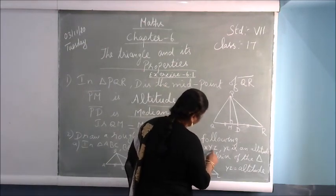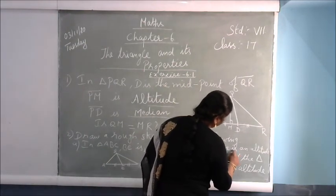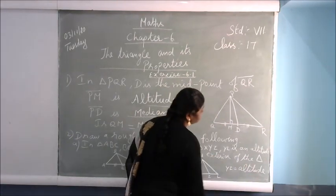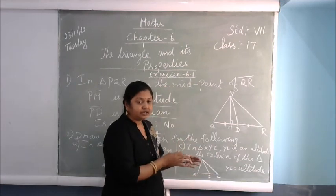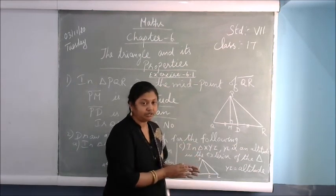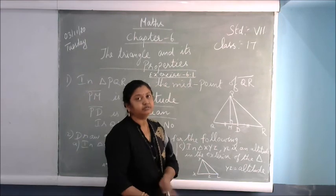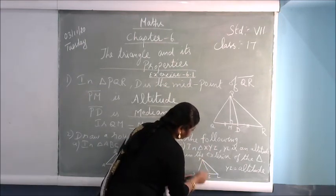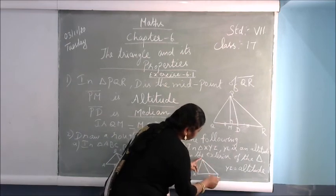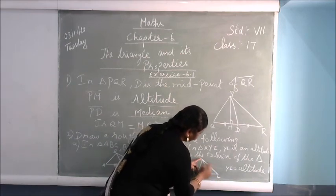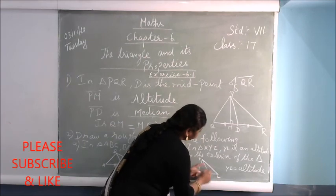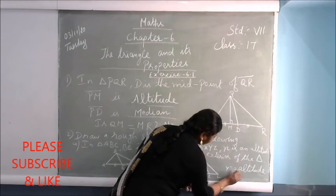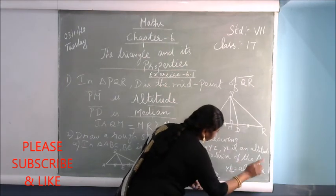In triangle XYZ, YL is an altitude in the exterior of the triangle. Exterior means the altitude should not come inside the triangle — it should come outside. First draw triangle XYZ, then put the line segment outside the triangle and join it. So YL is your altitude.